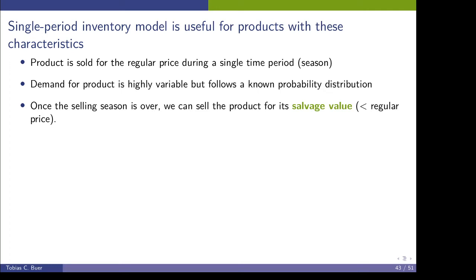The news vendor model, or the single period inventory model, is useful when your product shows the following characteristics. First, the product can be sold for the regular selling price during a single time period only. We also call this the season of the product.